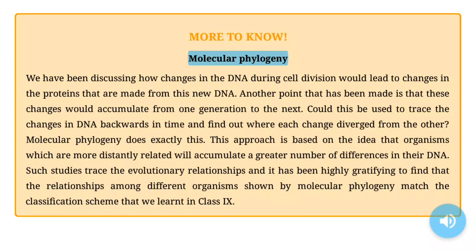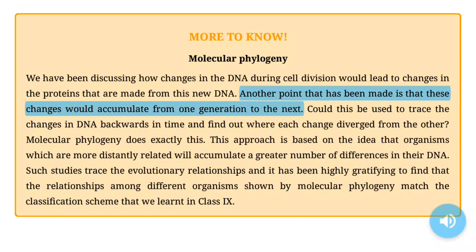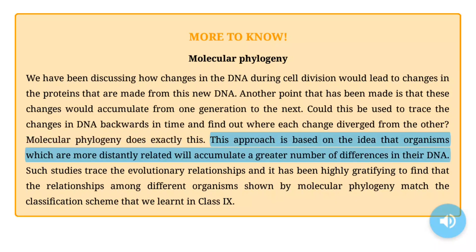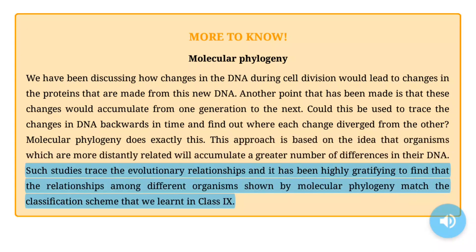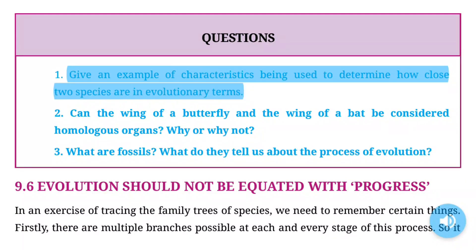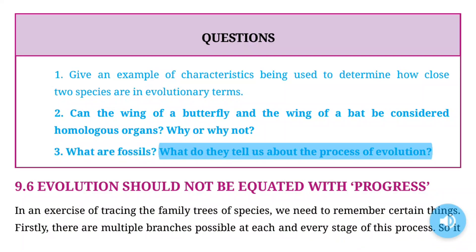Molecular phylogeny traces changes in DNA backwards in time to find where each change diverged. This approach is based on the idea that organisms which are more distantly related will accumulate a greater number of differences in their DNA. Such studies trace the evolutionary relationships, and the relationships among different organisms shown by molecular phylogeny match the classification scheme from our earlier study of biology.